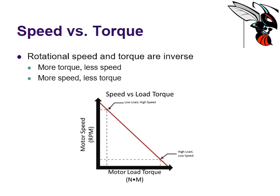But rotational speed and torque are actually inverse. So the more torque, the less speed, the more speed, the less torque.